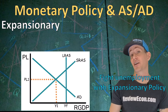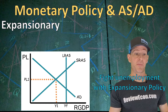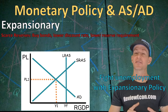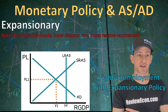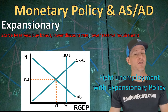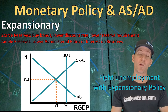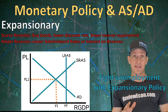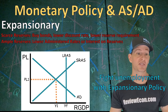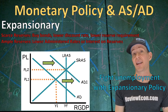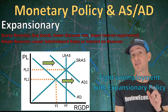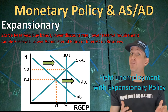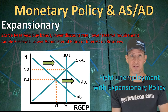For expansionary monetary policy to fight unemployment: in a scarce reserves system, buy bonds, lower the discount rate, or lower the reserve requirement; in an ample reserves system, lower administered rates or interest on reserves. Lower interest rates increase gross investment, shifting aggregate demand right and increasing real output toward YF, though with higher price levels.